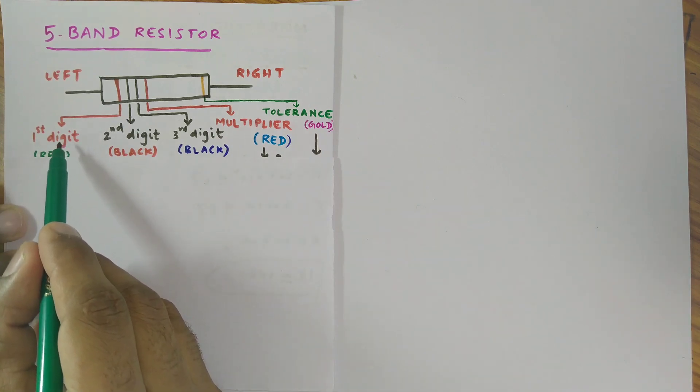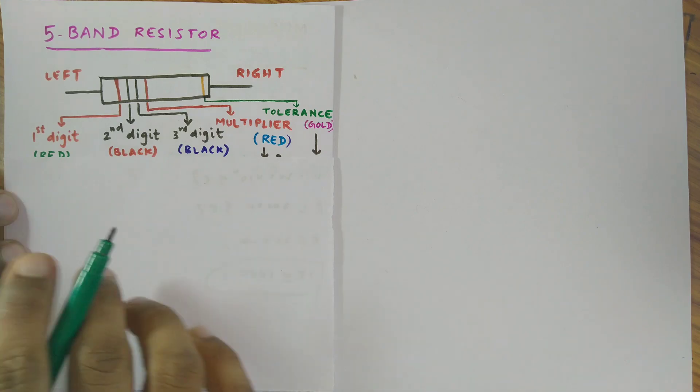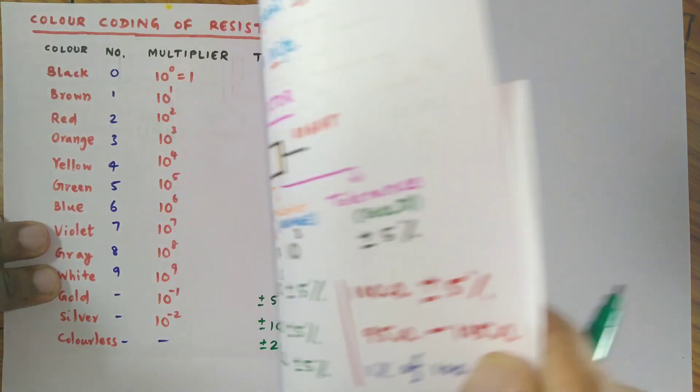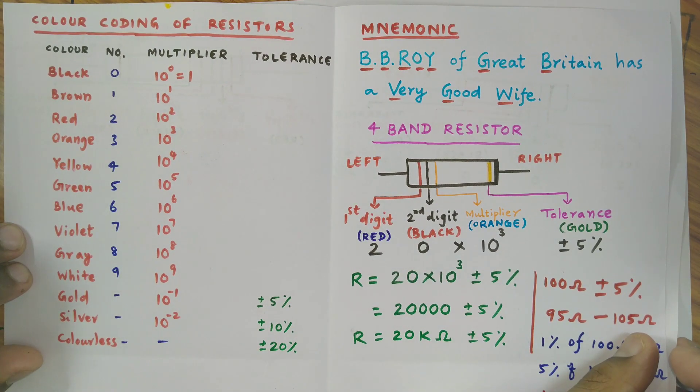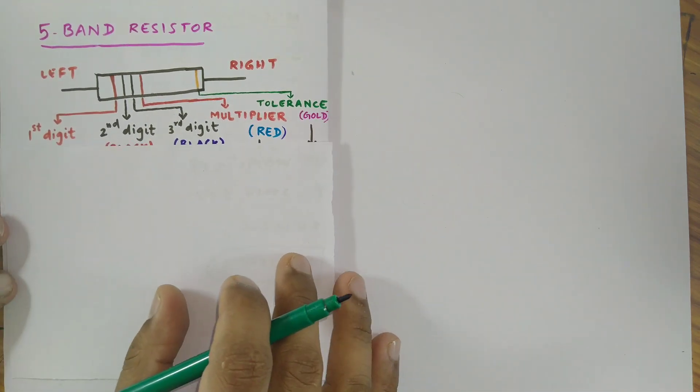So for this case as the first ring is red in color I write its value which is obtained from this table column that I have shown you in my previous video. Let's go ahead to find out the value of this resistor.